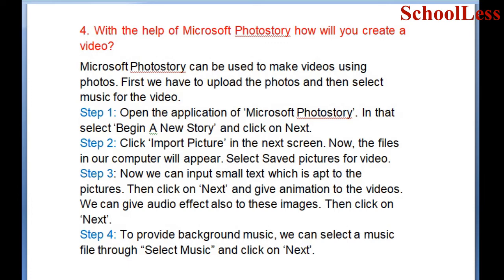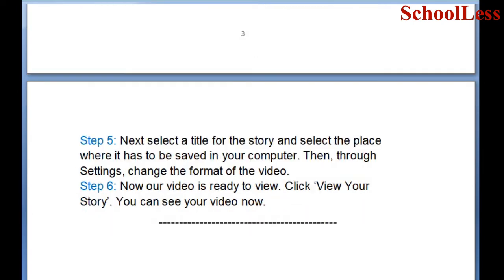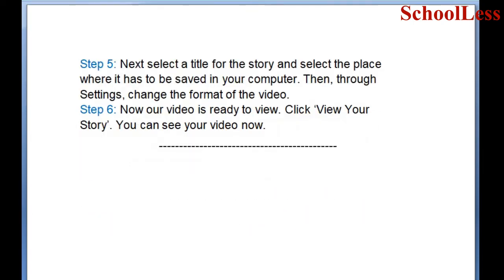Step 4: To provide background music, select a music file through Select Music and click Next. Step 5: Select a title for the story and select the place where it has to be saved on your computer. Then, through Settings, change the format of the video.